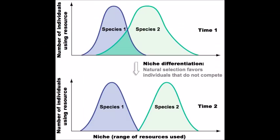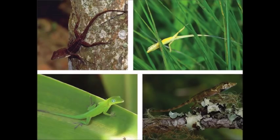A more subtle way to avoid competition is niche differentiation, where species use the same environments slightly differently such that it allows them to coexist. A great example of this are the anoli lizards of the Caribbean islands. They mainly feed on the same food source — insects — however they avoid competition by occupying different physical elevations, from the jungle floor all the way up to the top of the forest canopy.